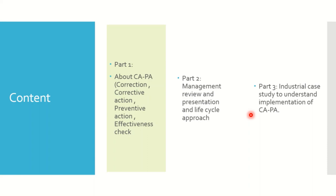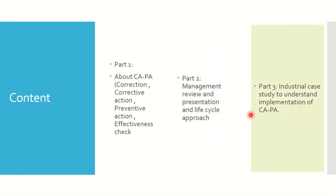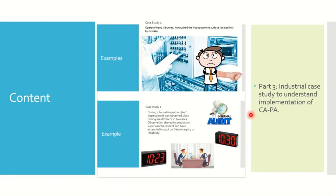Part 1 discusses the different kinds of definitions around CAPA. Part 2 discusses management review — how you should present data to management — and how CAPA relates to the life cycle of your product. Part 3 covers case studies: you will understand how to implement CAPAs and how to derive corrections, corrective actions, effectiveness checks, and preventive actions from an incident or non-conformance.